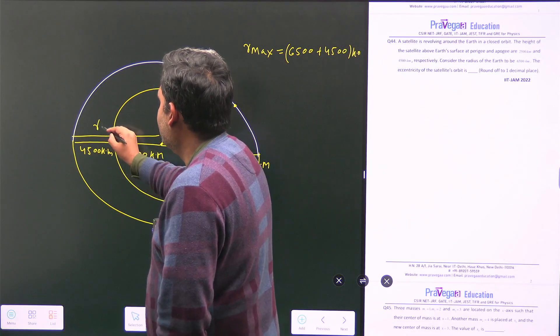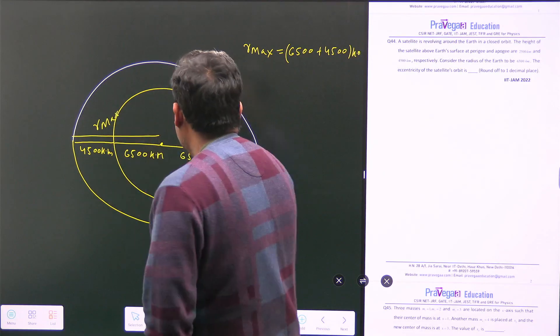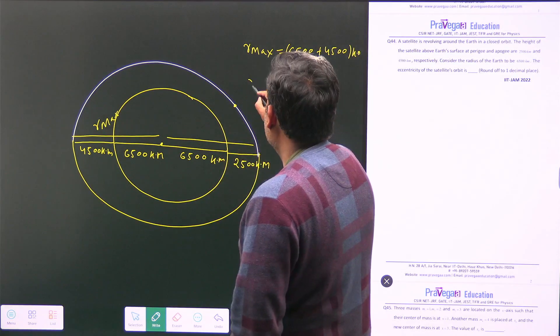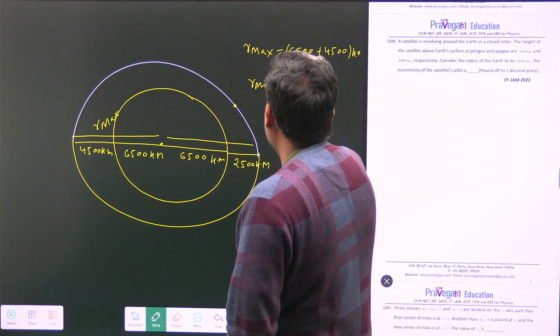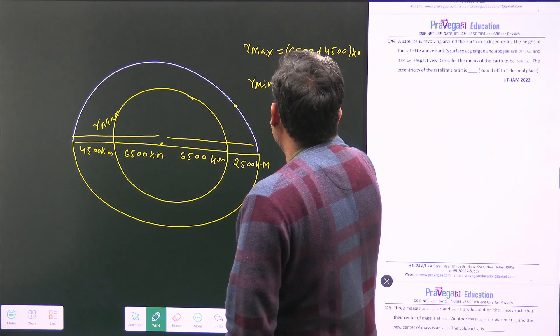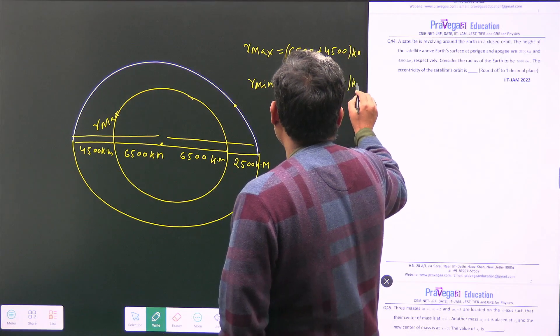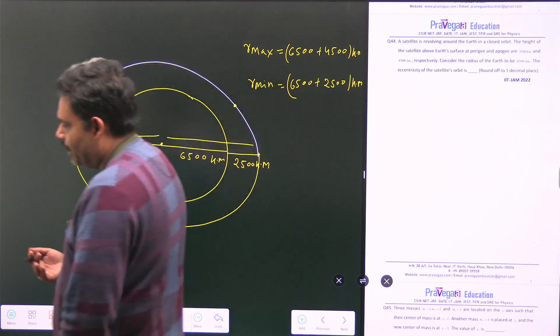And what will be my r minimum? So this distance is my r minimum. So my r minimum is 6500 plus 2500 km. So from there, we can have r maximum and r minimum.